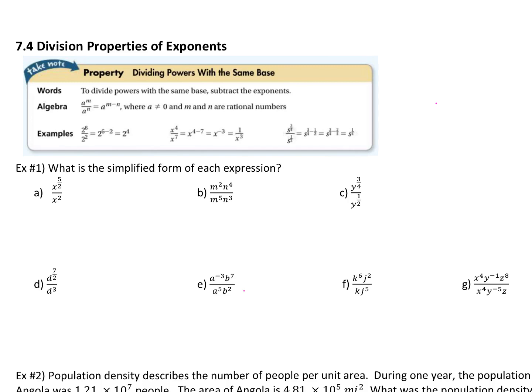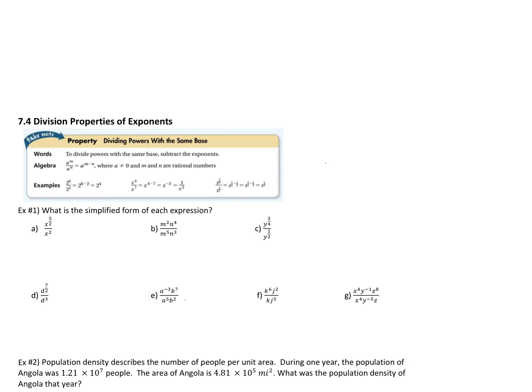We are doing 7-4 today — division properties. In my head it relates very closely to the multiplication property. When we are multiplying, if I have something like a to the third times a to the fifth, what do you do with those two exponents? You add them. So when multiplying, we add.